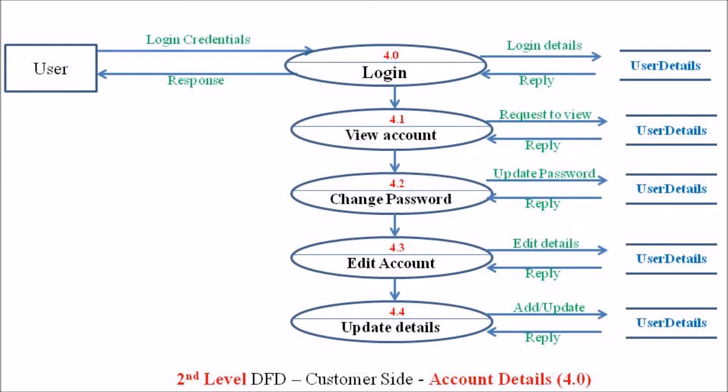Once the credentials are verified correctly, the user can proceed to process 4.1, which is view account. Viewing account means a customer can verify or display the details stored in the user detail data store — such as customer name, email ID, mobile phone, location, and so on.